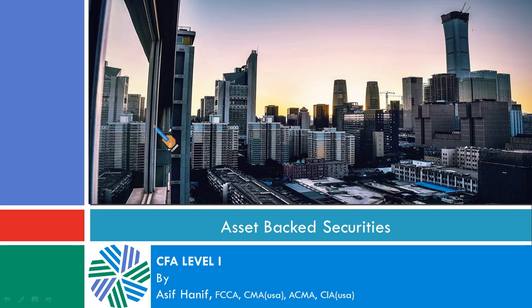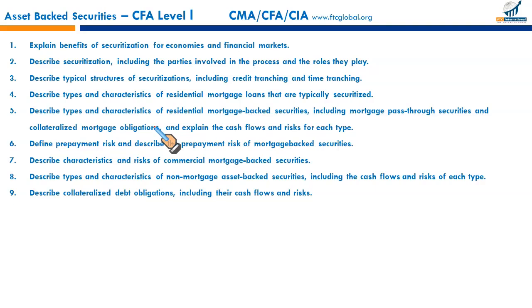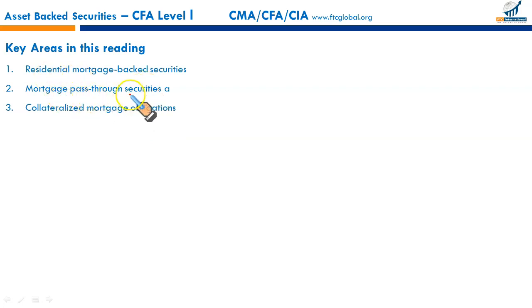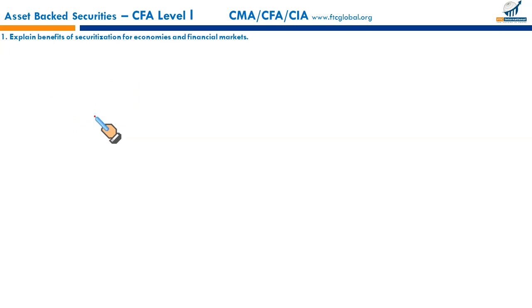Your next reading is asset-backed securities. Let's have a quick overview of the specific learning outcome statements. This reading covers three key areas: residential mortgage-backed securities, mortgage pass-through securities, and collateralized mortgage obligations. Let us go through each learning outcome statement one by one.